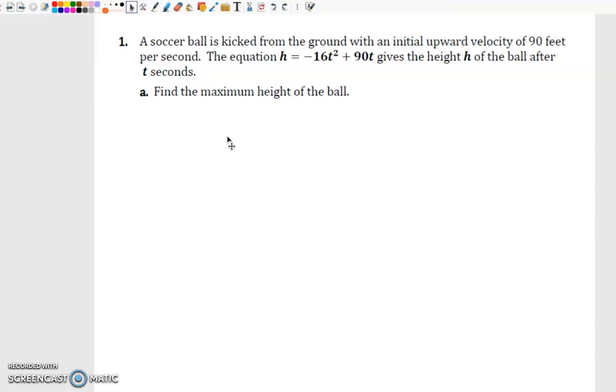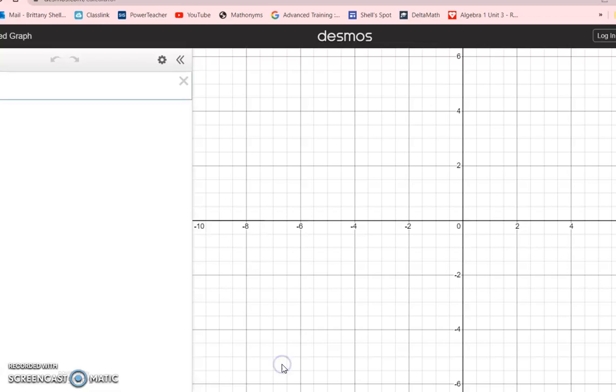It says a soccer ball is kicked from the ground with an initial upward velocity of 90 feet per second. The equation h equals negative 16t squared plus 90t gives the height h of the ball after t seconds. We're going to find the maximum height of the ball. The first thing we're going to do is graph this equation, so we're going to come over here to Desmos.